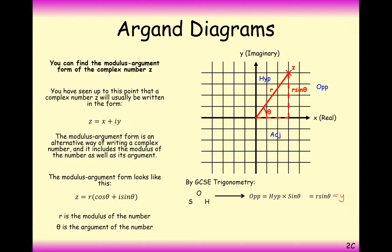And exactly the same for the cos angle here. Adjacent equals hypotenuse times cos theta, which would be the hypotenuse of r times by cos of the argument, theta. And this effectively here gives you the x-axis.